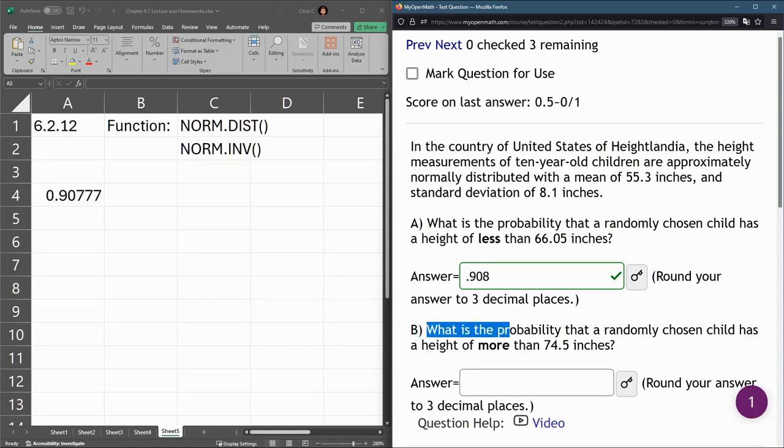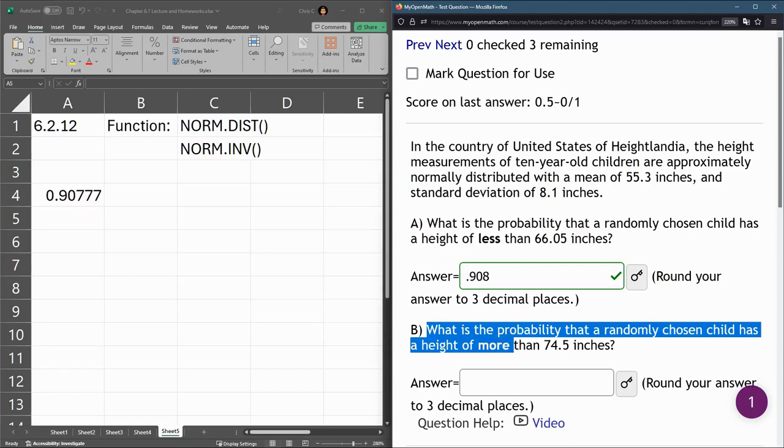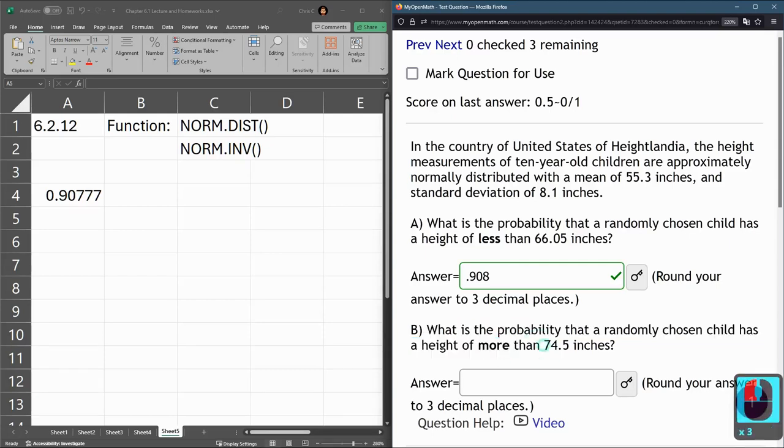Now, part B, what's the probability a randomly chosen child has height of more than 74.5? So I didn't talk about the intuition previously, but the average height, the mean height is 55. And so we wanted to know the chance a child has height less than 66. So it's a pretty good chance because that's significantly higher than the average height. In this part B, we want to know if a child has a height of more than 74 inches, which is much more above the mean. So there's not going to be a high percentage here or high probability.